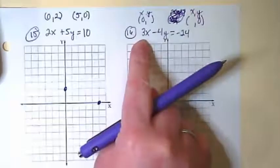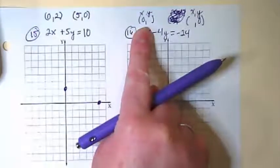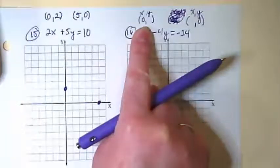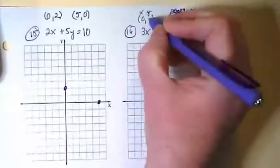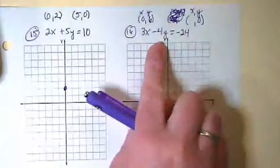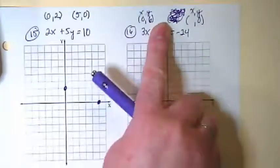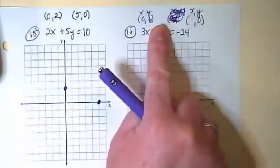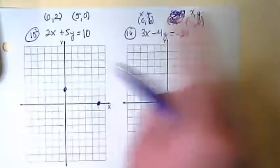Okay, again, if I plug in 0 for the x, I'm going to have negative 4y is equal to negative 24. What is negative 24 divided by negative 4? Positive 6. And if I plug in a 0 for the y, I'm going to have 3x divided into negative 24. Negative 24 divided by positive 3 would give us negative 8.